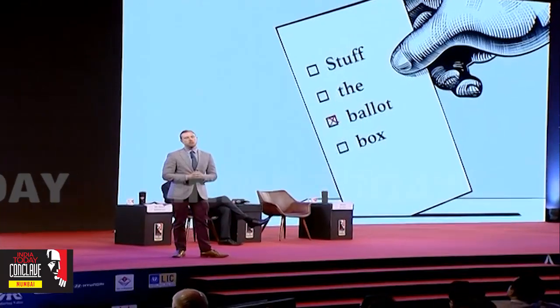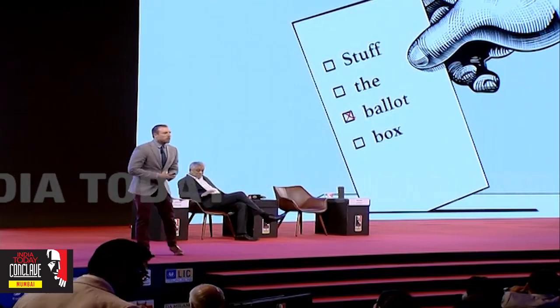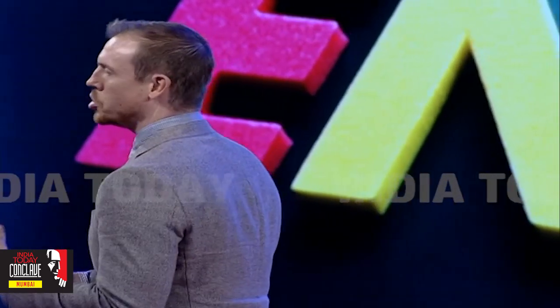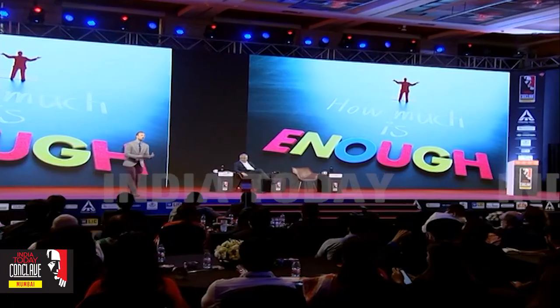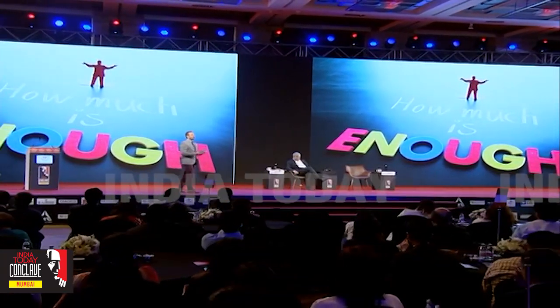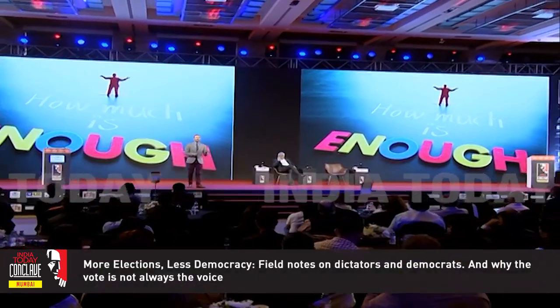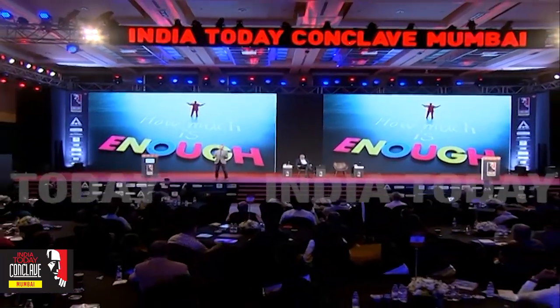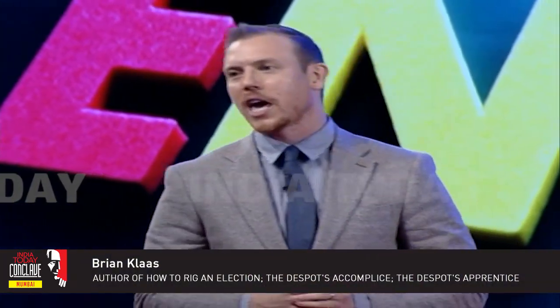Then on top of that, you have stuffing the ballot box. With paper ballots, one of the big risks is that you can stuff ballots. But there's a big problem with stuffing the ballot box too, which dictators and despots have learned: you don't know how much is enough. If you're in an authoritarian country, you're not exactly sure what your actual support is — you don't know if you have 30% or 70% of public support. So you have to make a decision about how much to stuff the ballot box, and very often your henchmen get it wrong. They put too many ballots in one box — more than the number of voters in the precinct — or they rig too aggressively in some other way, and then you get caught and the game is up.